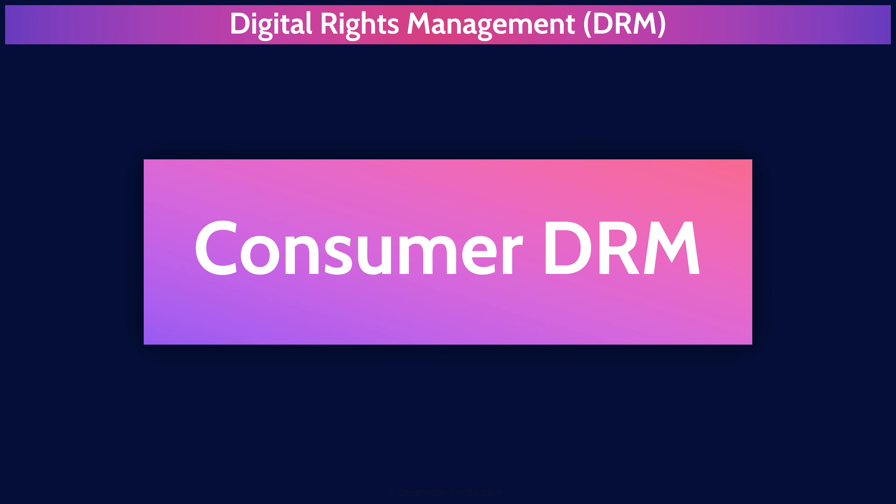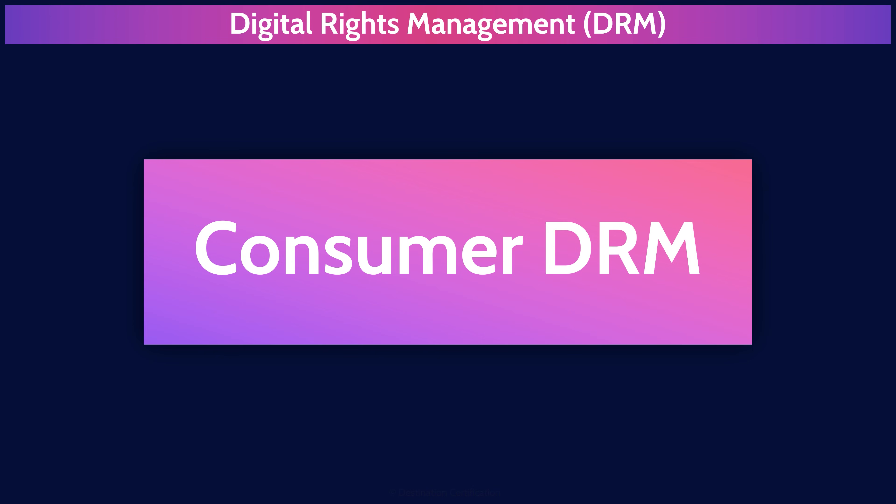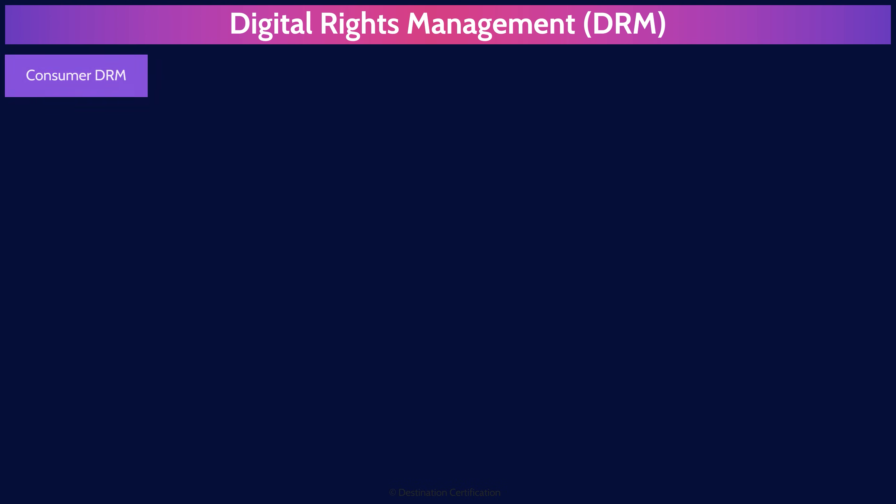Consumer DRM is a specific type of DRM focused on protecting digital content consumed by individual users, such as music, movies, books, and games. It ensures that content can only be used in ways permitted by the content owner or publisher.